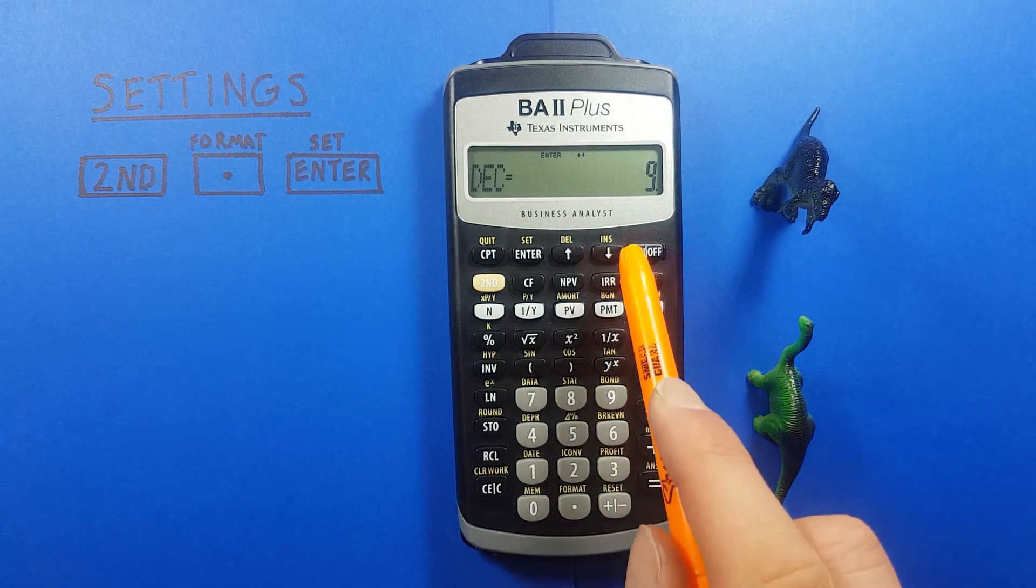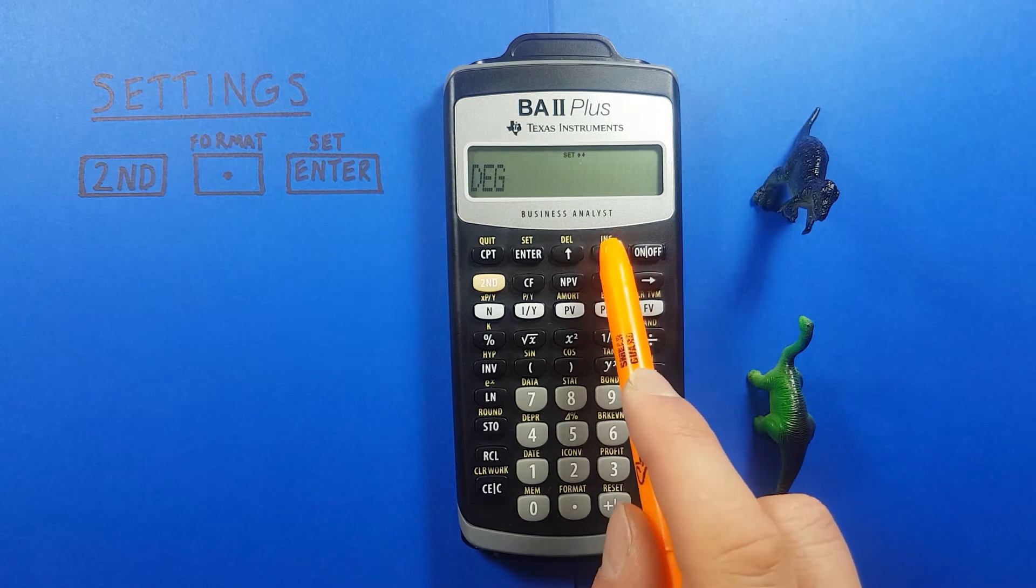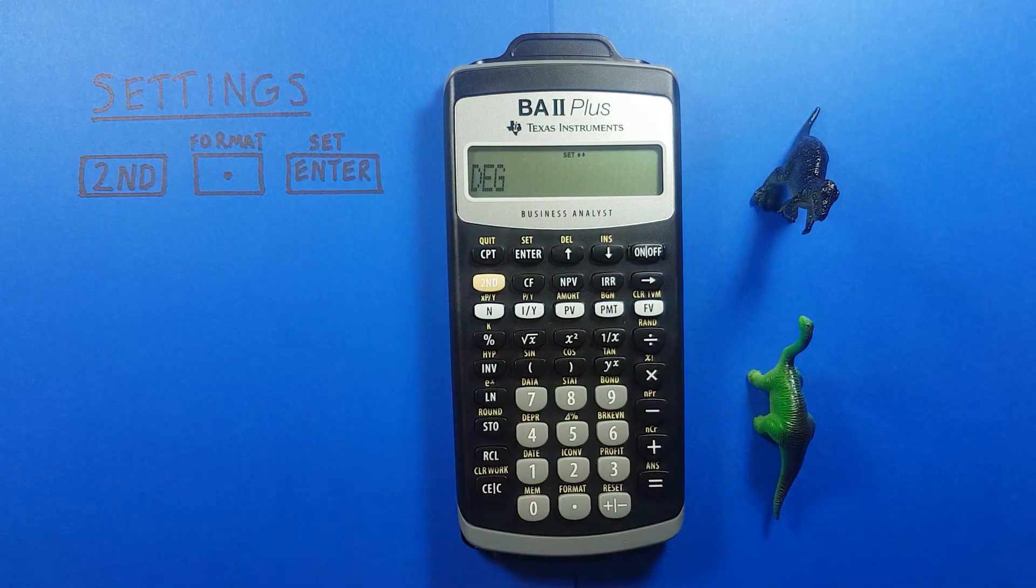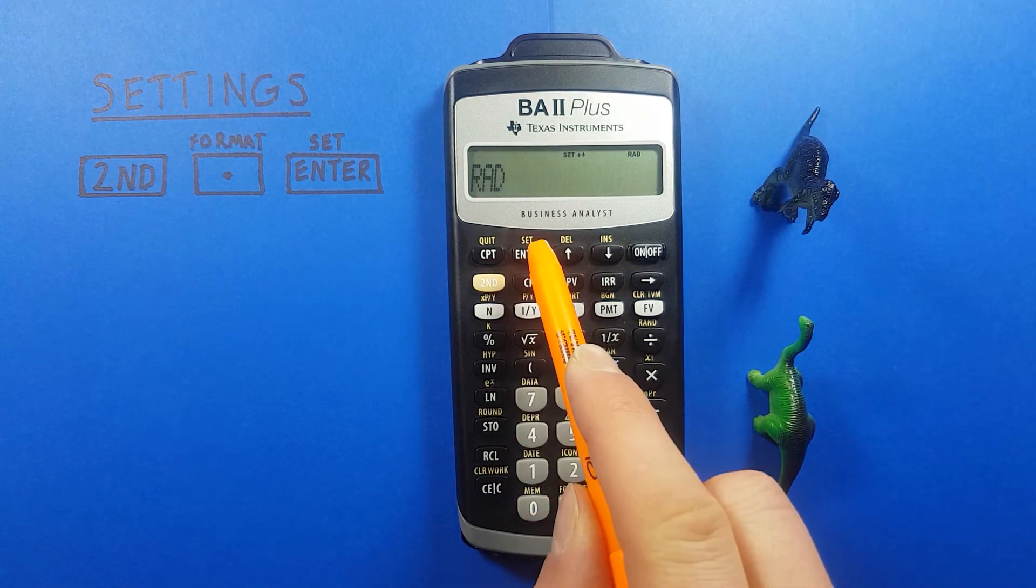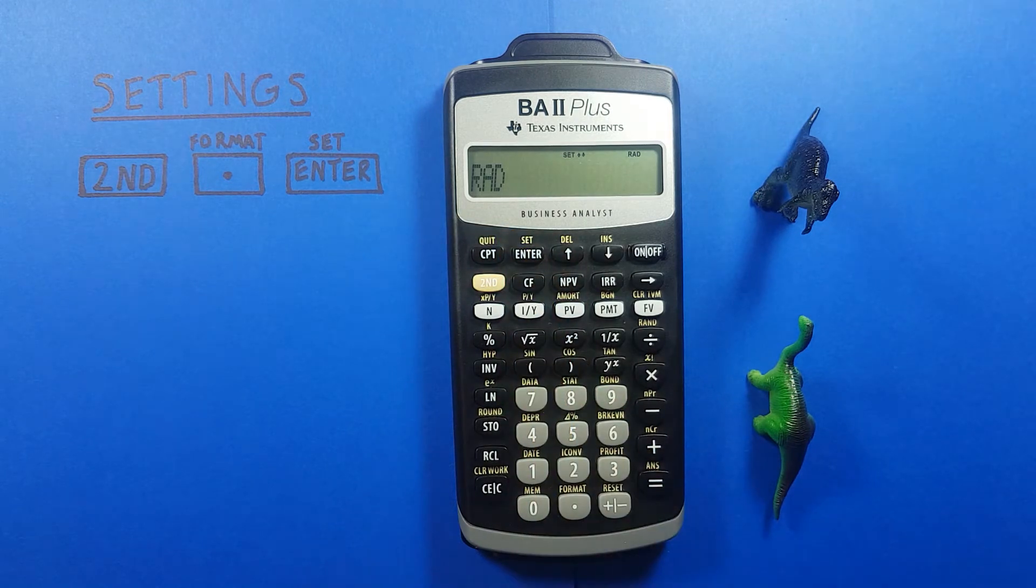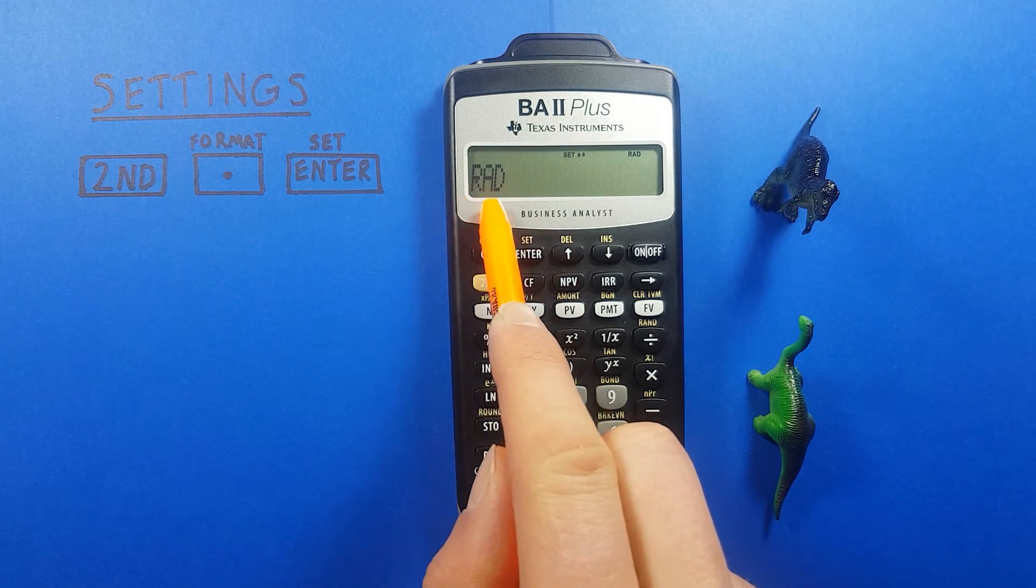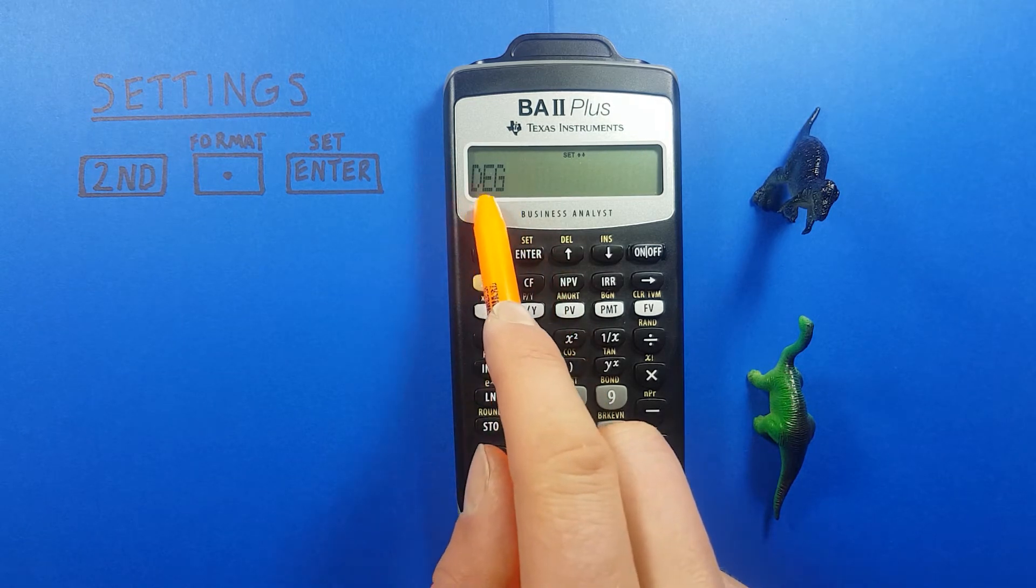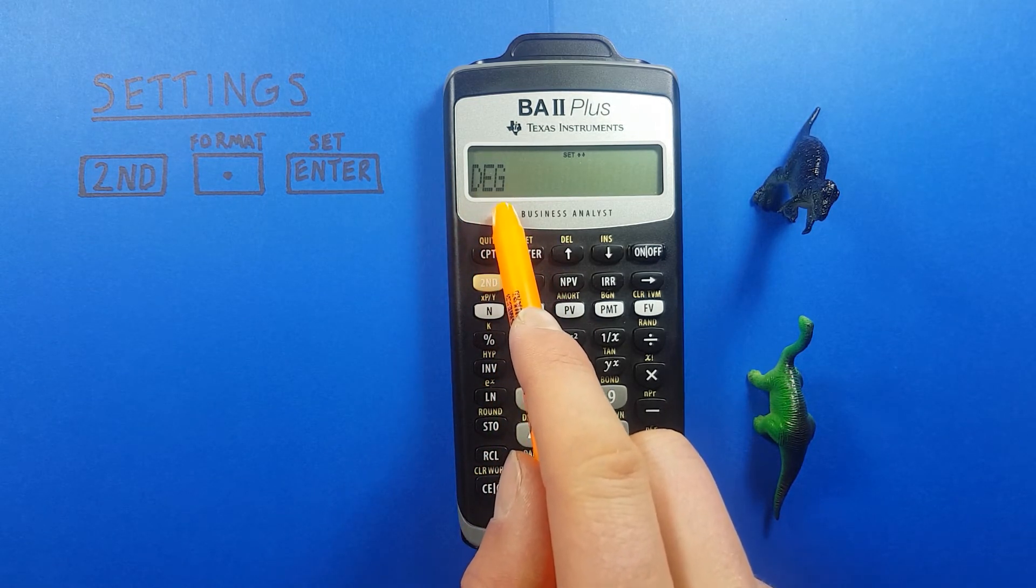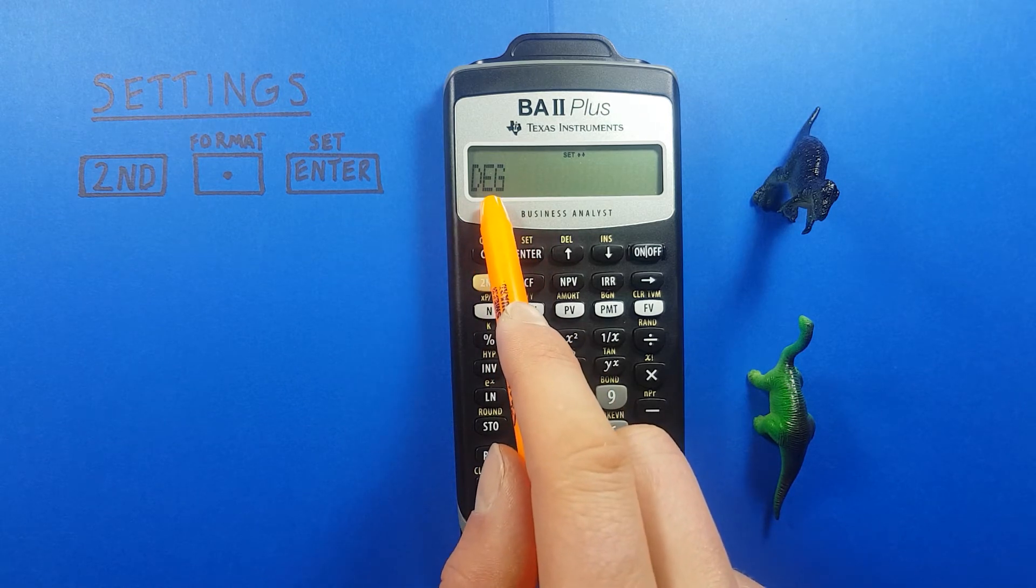Our second setting if we go down 1 with the arrow key here is DEG. This is our angle units so right now it's set to degrees. If we want to change that we can press second enter and you can see it changes to rad or radians. If you press second enter again it changes back to degrees. So those are two options in that regard and we'll leave it set to degrees for now.